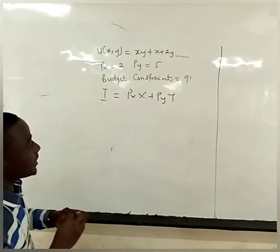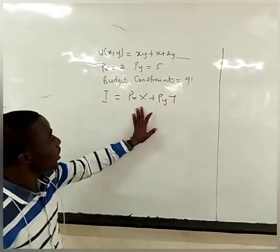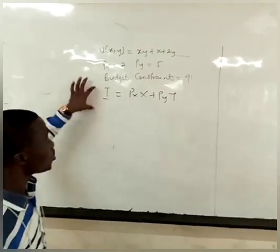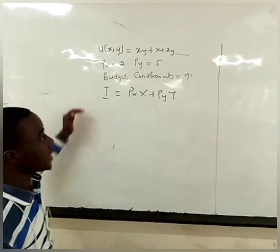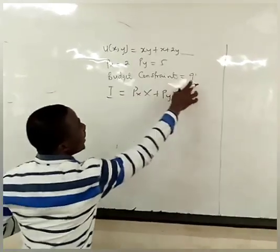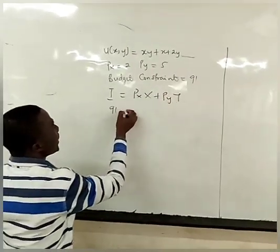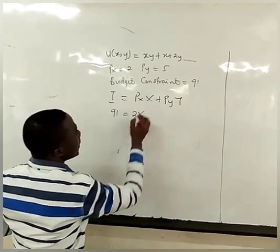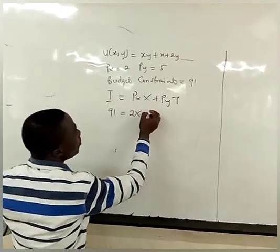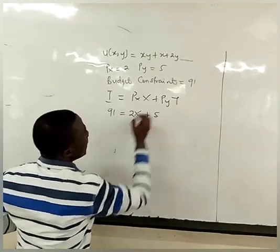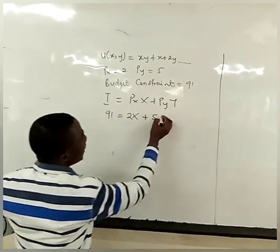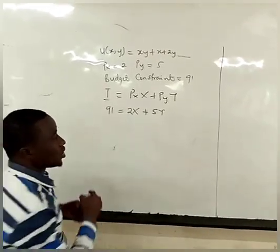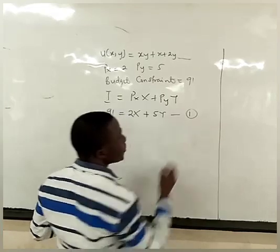It means that the price of x times the quantity of x consumed, plus the price of y times the quantity of y consumed, equals your income — so your total expenditure is equal to income. From here our income is 91, equal to the price of x which is 2 times the quantity of x consumed, plus the price of y which is 5 times the quantity of y consumed. This is our budget constraint and we can name this equation 1.